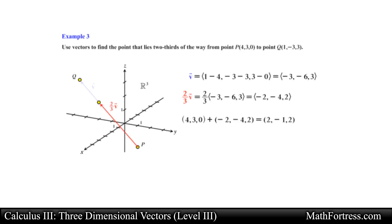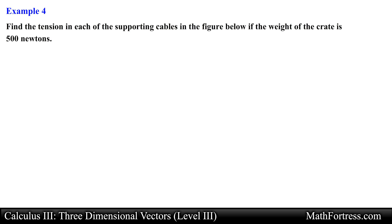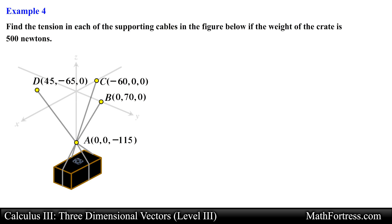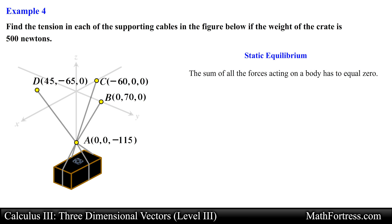Let's end the video with the final example: find the tension in each of the supporting cables in the figure below if the weight of the crate is 500 N. Here we have a static equilibrium problem in three dimensional space. The concepts of static equilibrium are the same — the sum of all forces acting on a body has to equal 0. For this problem we have a crate hanging from 3 ropes attached at various points relative to a 3 dimensional coordinate system, and we are given the coordinates of points A, B, C, and D.